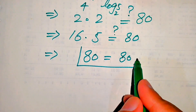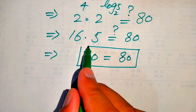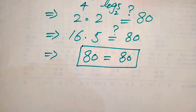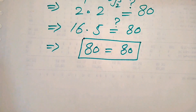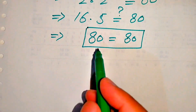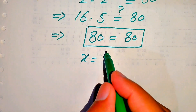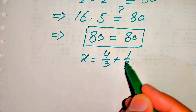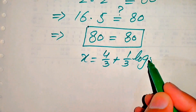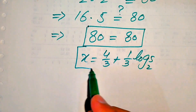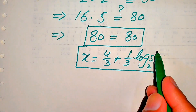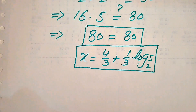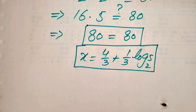This shows that the value of x equals 4 over 3 plus 1 over 3 times log base 2 of 5 is satisfied by the given question statement. This is the final answer of this problem. Thank you so much for watching this video. Please subscribe to my channel for more exciting videos.